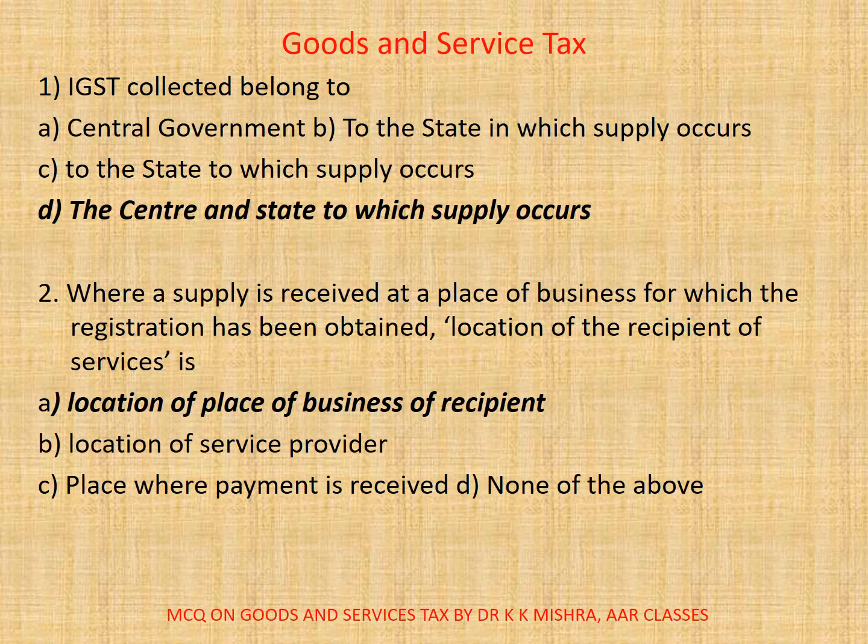Question number 1: IGST collected belongs to — A. central government, B. to the state in which supply occurs, C. to the state which supply occurs, D. the center and state to which supply occurs. Correct option is D: the center and state to which supply occurs.